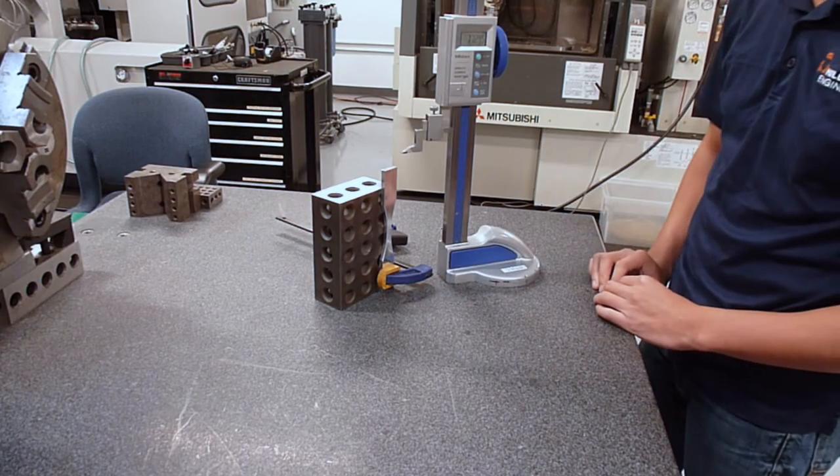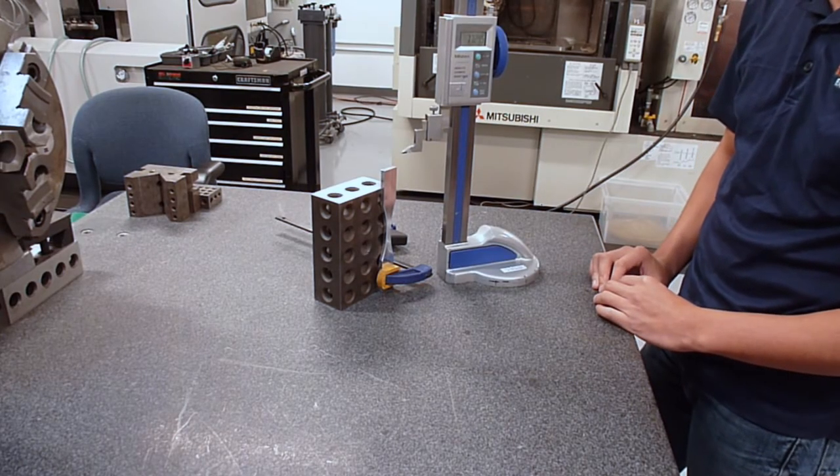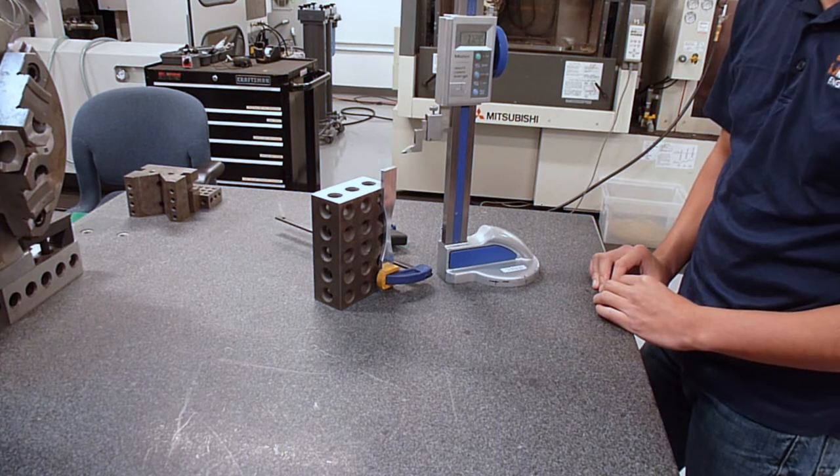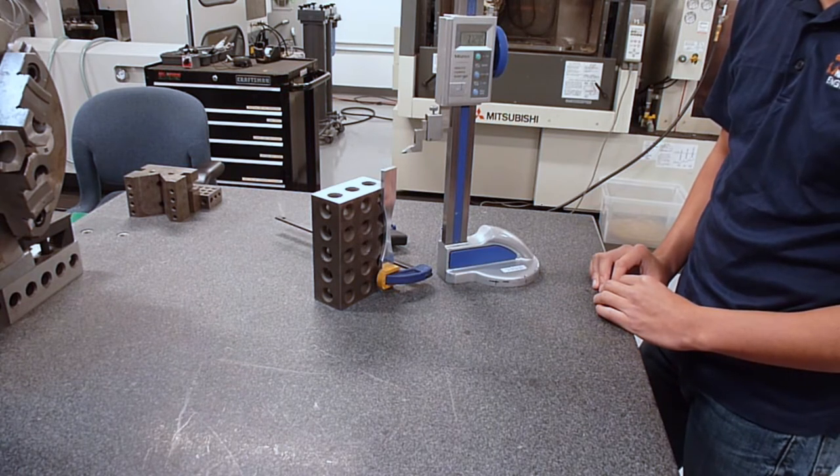Before any strain gauges can be applied, the tester must scribe the desired location for the measurement to take place. This can be done with a precision scribing tool like this height gauge.